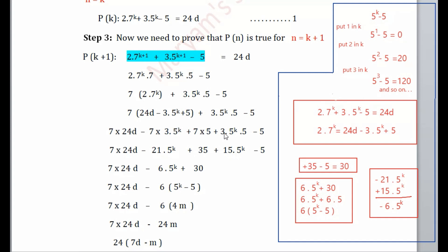Now combining the like terms: -21·5ᵏ + 15·5ᵏ = -6·5ᵏ. And 35 - 5 = 30. So the expression becomes 7·24d - 6·5ᵏ + 30.